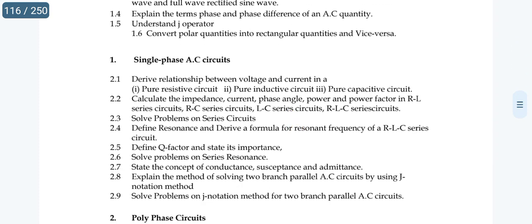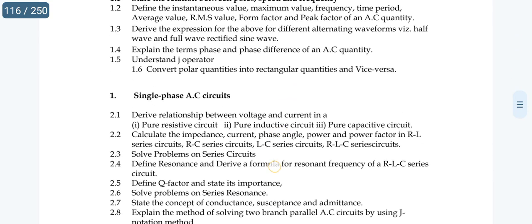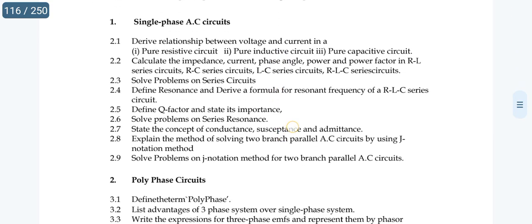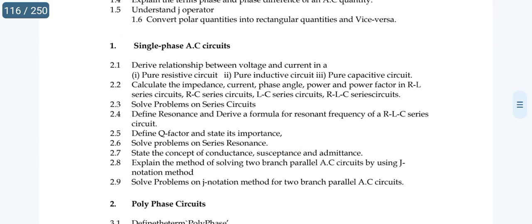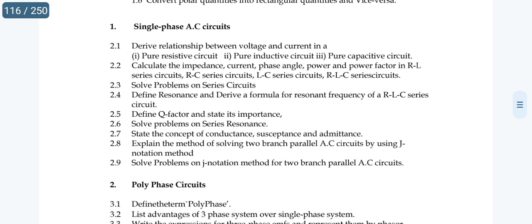For single-phase AC circuits in chapter 2, you have two SAs and two short questions. The SAs are from topics 2.1, 2.2, and 2.3. You have at least one SA from these.